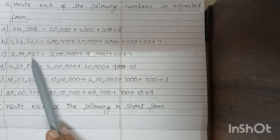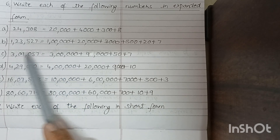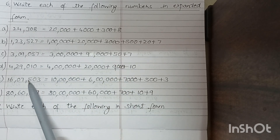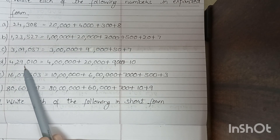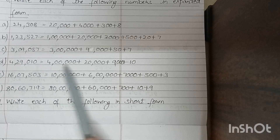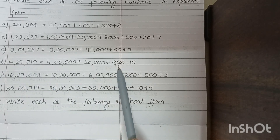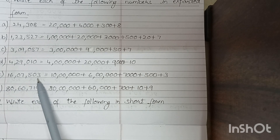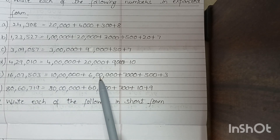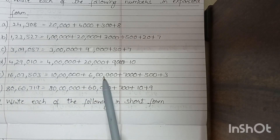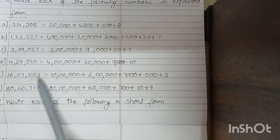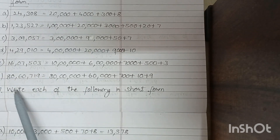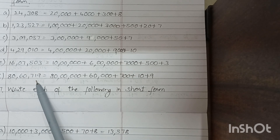C. 3,09,057 equals 3,00,000 plus 9,000 plus 50 plus 7. D. 4,29,010 equals 4,00,000 plus 20,000 plus 9,000 plus 10. E. 16,07,503 equals 10,00,000 plus 6,00,000 plus 7,00,000 plus 500 plus 3. F. 80,67,019 equals 80,00,000 plus 60,00,000 plus 7,00,000 plus 700 plus 10 plus 9.